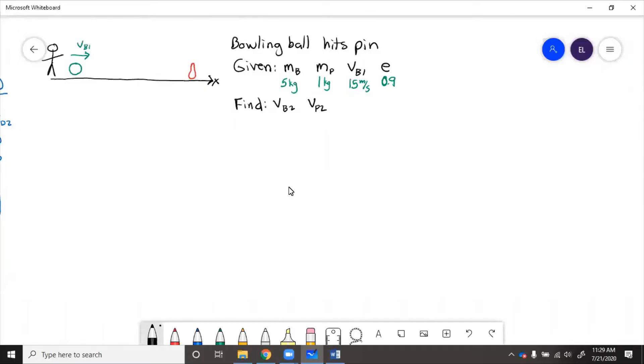In this example, we have a person who bowls a bowling ball that hits a pin, and then the bowling ball and the pin will both keep moving. So we're given masses of the bowling ball and pin, an initial speed of the ball, and the coefficient of restitution.